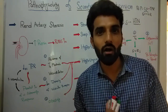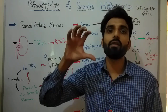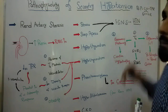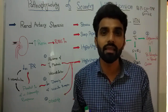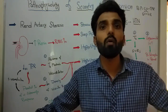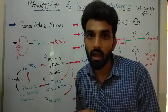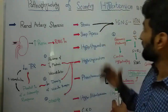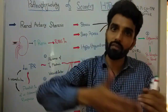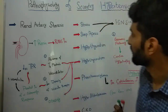Similarly, catecholamines will also act on alpha receptors present on the smooth muscle of blood vessels, causing vasoconstriction. When there is vasoconstriction, total peripheral resistance (TPR) will go up, and when TPR increases, blood pressure will increase. So during stress, because of over-activation of the sympathetic nervous system, the patient may suffer from hypertension — and since stress is the secondary condition causing it, this is called secondary hypertension.